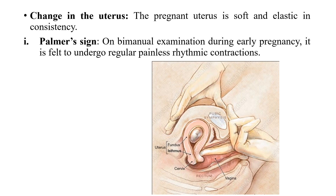In the uterus, there is a soft, elastic consistency. The next sign is Palmer's sign, which involves bimanual examination of the uterus to detect characteristic changes during early pregnancy.